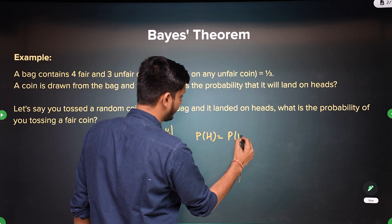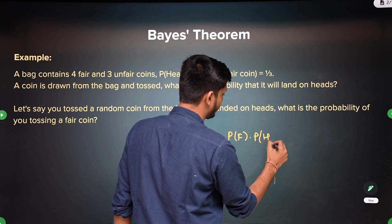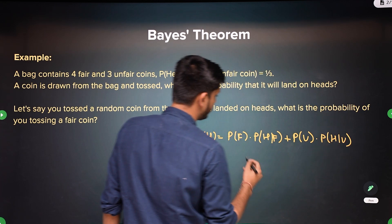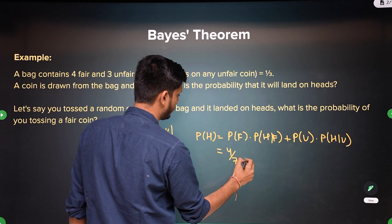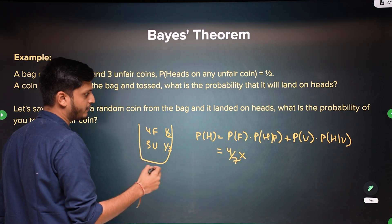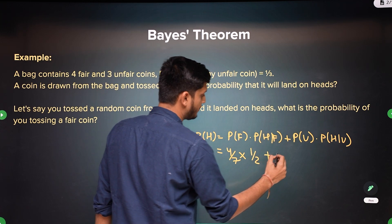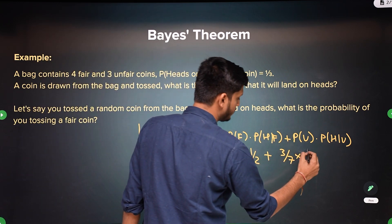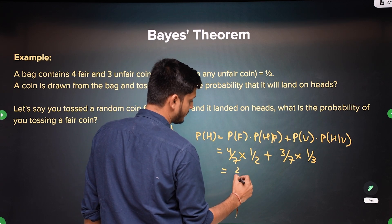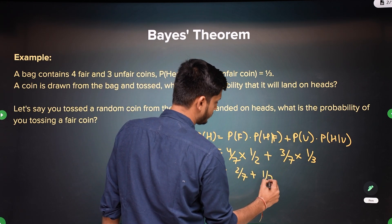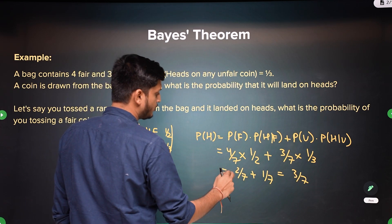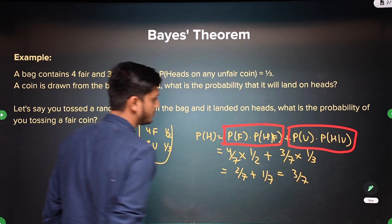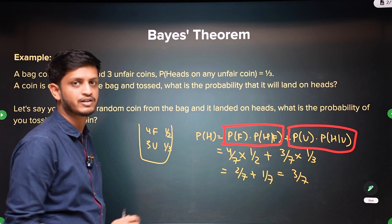It is the probability of taking a fair coin times probability of getting heads in a fair coin, plus probability of getting an unfair coin times probability of getting heads on an unfair coin. So it is 4 by 7 times 1 by 2, plus 3 by 7 times 1 by 3. This gives 2 by 7 plus 1 by 7, which is 3 by 7. The fair coin's contribution is 2 by 7 and the unfair coin's contribution is 1 by 7 in the total probability.